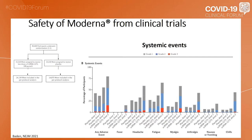The number of side effects was noted about the same with the first and second dose of the Moderna vaccine. If we focus on systemic events, the side effects were noted more with the second dose, and were mainly fatigue, headache, chills, myalgia, and arthralgia.